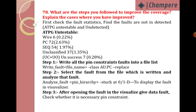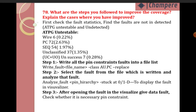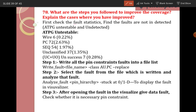First, check the fault statistics report — from the log or statistical report, find the faults that are not detected. Mainly look at ATPG untestable and undetected faults. For example, under ATPG untestable faults: wire constraints — 6 faults not detecting, causing a 0.22% drop.